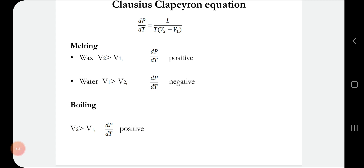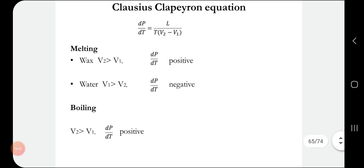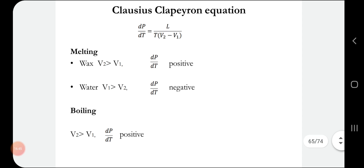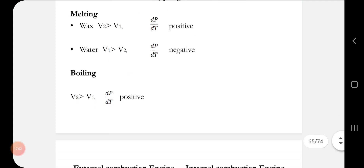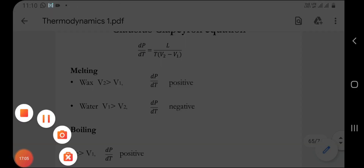If we go to a higher altitude, the atmospheric pressure decreases. When pressure decreases, the transition temperature — the boiling point — also decreases. So at high altitude, water boils below 100 degrees Celsius. That completes our discussion of the Clausius-Clapeyron equation. Thank you for listening.